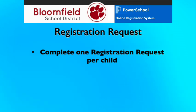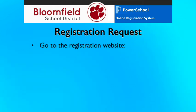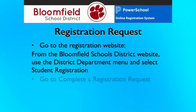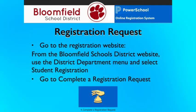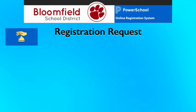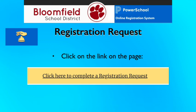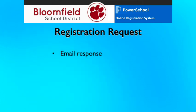For example, if you are registering three children, you must fill out the form three times, once for each child with their unique information. The link to complete a registration request can be found on the registration website. Click on Complete a Registration Request. On the Registration Request page, click on the link that says, Click here to complete a registration request. This will take you to the request form. You will only need to answer a small number of questions in the request, and you will not need to upload any documents yet. You will receive a response to your request in an email sent to the email address you provide on the form.